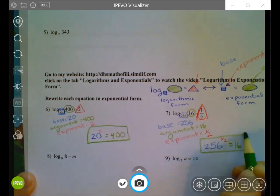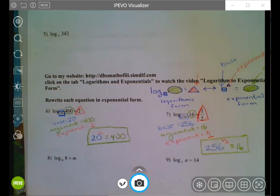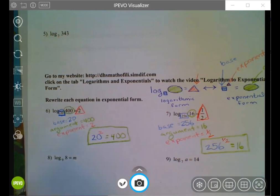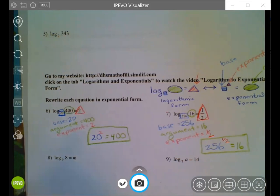By the way, raising something to the one half power is the same as taking the square root. That's just one of the properties of exponents. We don't have to worry about that too much. But if you take the square root of 256, you get 16, because 16 squared is 256. All right. So that's really all we're doing here.